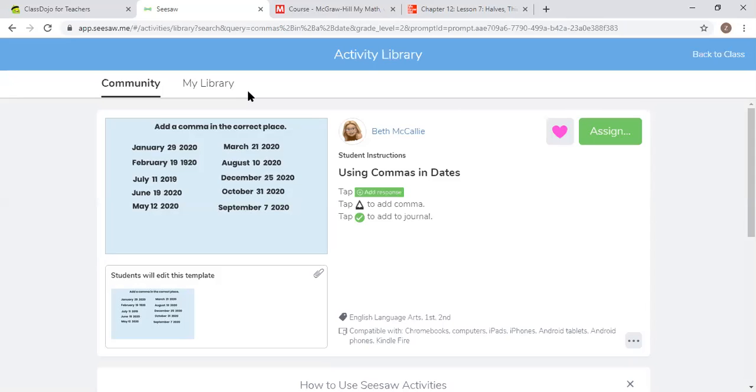Today we're looking at commas in a date. So when we look here, January 29th, 2020, I would add the comma between the day and the year. So when you're looking at writing a letter and you write out today's date of April 28th, 2020, you're going to put the comma between 28 and 2020.